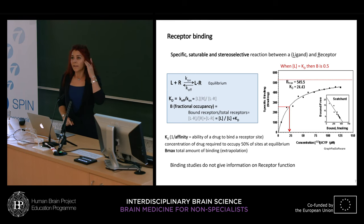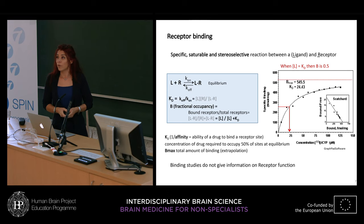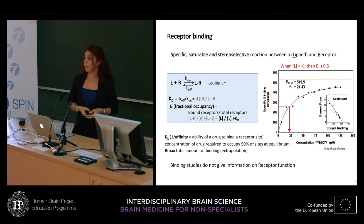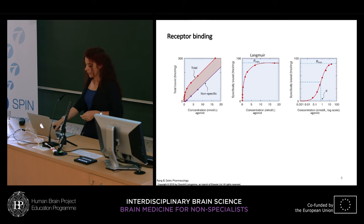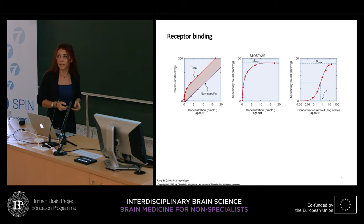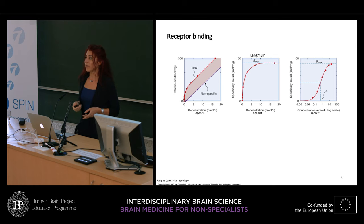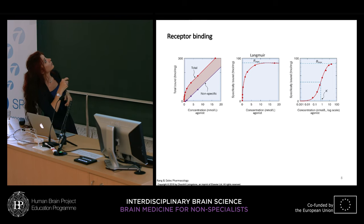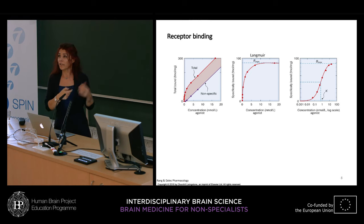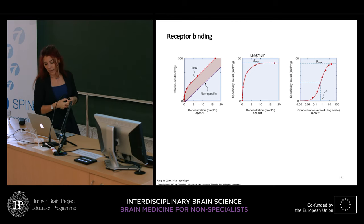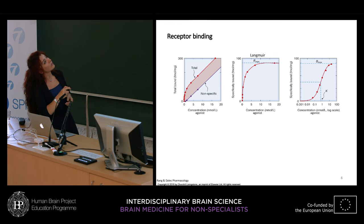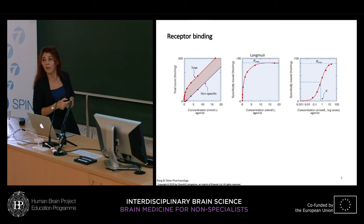Importantly, in receptor binding reactions we get information about what the ligand is doing at the receptor, but we are not getting information on receptor function. When doing receptor binding reactions, one obtains total binding and must account for non-specific binding — drug combined to other places in the membrane that are not receptor sites — which must be subtracted to get a Langmuir representation. One can also use a logarithmic scale to obtain a sigmoidal curve, from which the KD value is read.